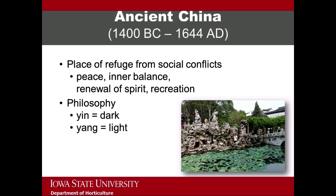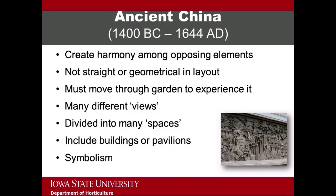It shows a massive rock arrangement and large water feature with a raised bridge over it. A key feature of Chinese gardens is that they create harmony among opposing elements, such as light and dark. The gardens do not have a straight or geometrical layout, in contrast to many Western gardens. You must move through the garden in order to fully experience it, because there are many different views as a result of the garden being divided into many different spaces. The garden often includes buildings and pavilions.